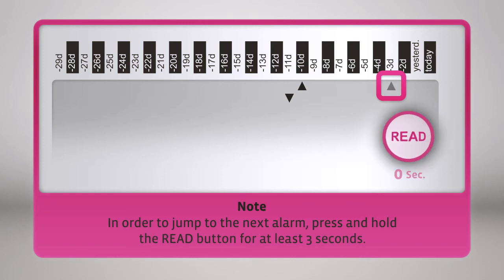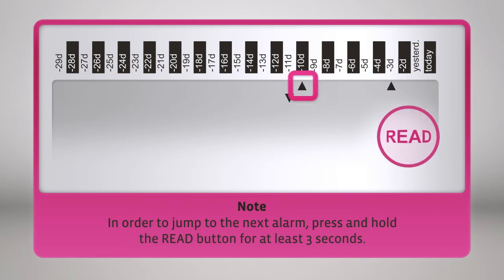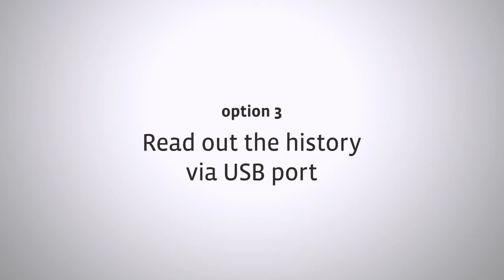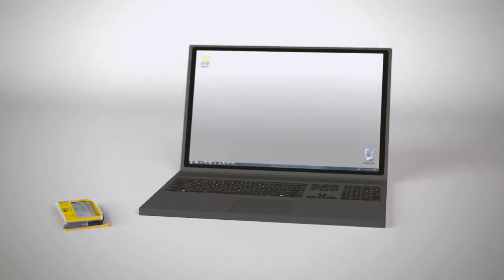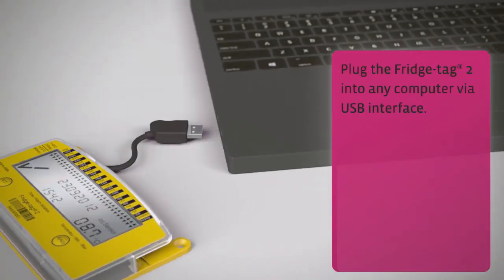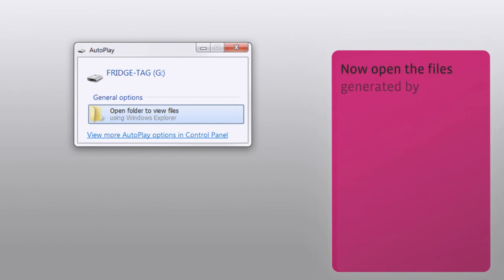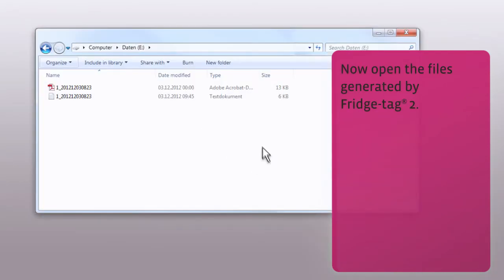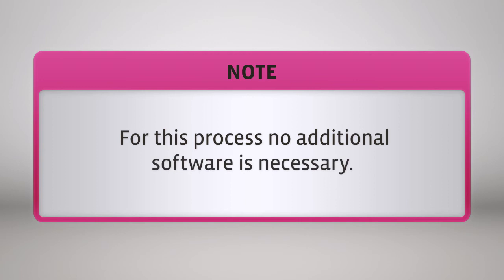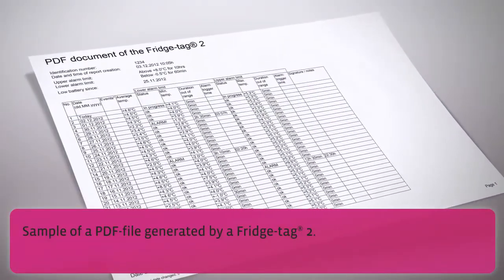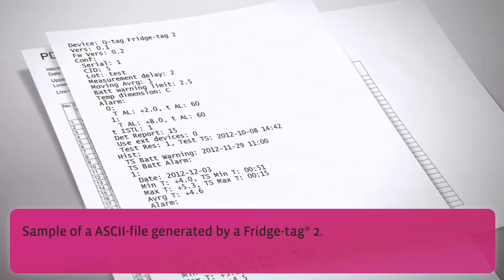In order to jump to the next alarm, press and hold the read button again for at least 3 seconds. Third option: how to read the history via USB port. Plug the Fridge Tag 2 into any computer via USB interface. The following window will appear. Now open the files generated by Fridge Tag 2. No additional software is necessary. A sample PDF file and a sample ASCII file can be generated by the Fridge Tag 2.